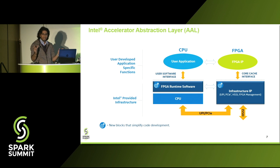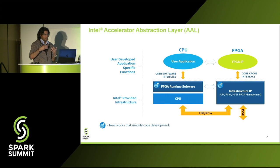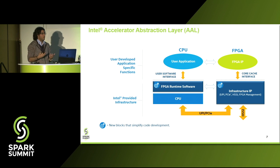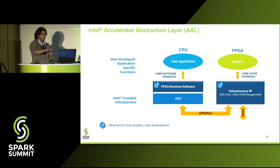The FPGA runtime uses hardware framework infrastructure components which talk to the physical bus — UPR PCI — to determine whether the FPGA is there. Since an FPGA is a programmable engine, you can swap on different workloads, so your runtime should also give you the ability to program an accelerator on the FPGA. You also need resource monitoring APIs. We club all these APIs along with the infrastructure IP and expose them to the user application.